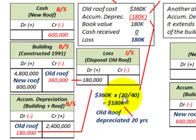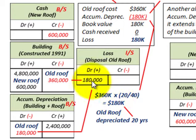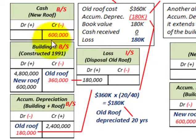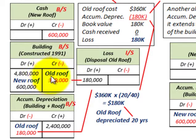The old roof cost was $360,000 and it was depreciated for 20 of the 40 years for $180,000, resulting in a loss of $180,000. We record a debit to loss of $180,000. We credit cash for $600,000 — the cost of the new roof. For our building account originally debited for $4,800,000 in 1991, we credit or remove the old roof at $360,000.